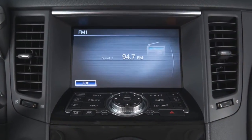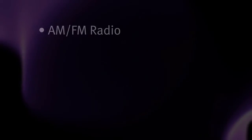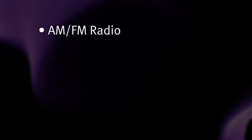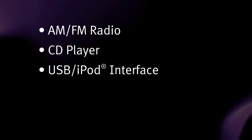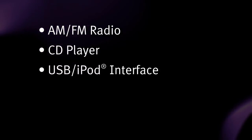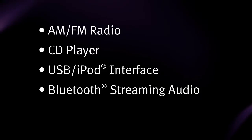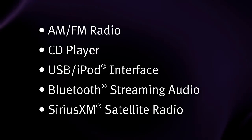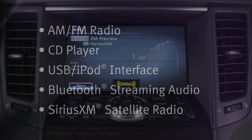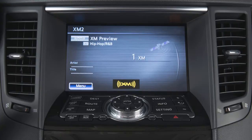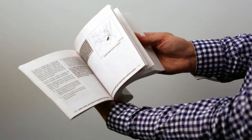The audio system with navigation includes an AM FM radio, CD player, USB iPod interface, Bluetooth streaming audio, and Sirius XM satellite radio. For more information on Sirius XM satellite radio, see your owner's manual or go to www.siriusxm.com.